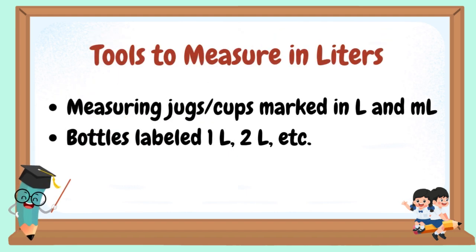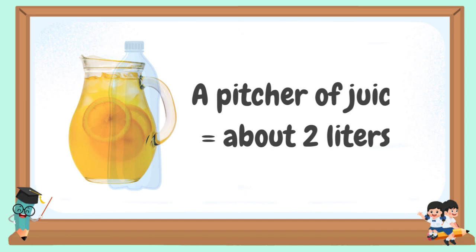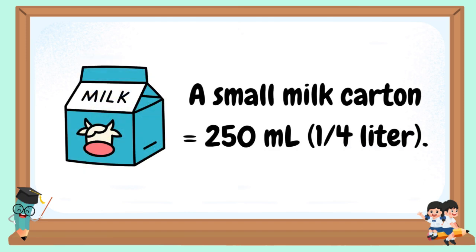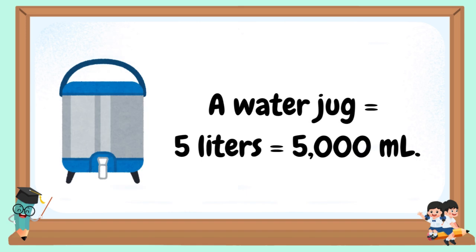Tools to measure in liters: measuring jugs and cups marked in liters and milliliters, and bottles labeled one liter, two liters, etc. A mineral water bottle is equivalent to one liter. A pitcher of juice is equivalent to about two liters. A small milk carton is equivalent to 250 milliliters or one-fourth liter. A large soda bottle is equivalent to 1.5 liters or 1,500 milliliters. A water jug is equal to 5 liters, also equivalent to 5,000 milliliters.